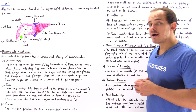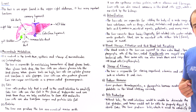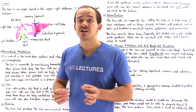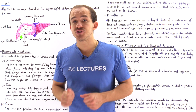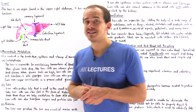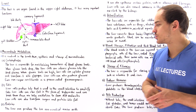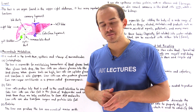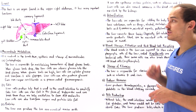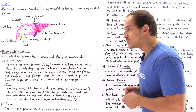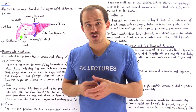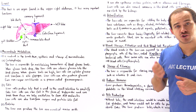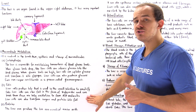When the body needs energy, liver cells can break down fatty acids and use them to form ATP molecules in a reaction known as beta oxidation. Additionally, if we eat too much sugar or protein, liver cells transform the excess sugars or protein into fat.